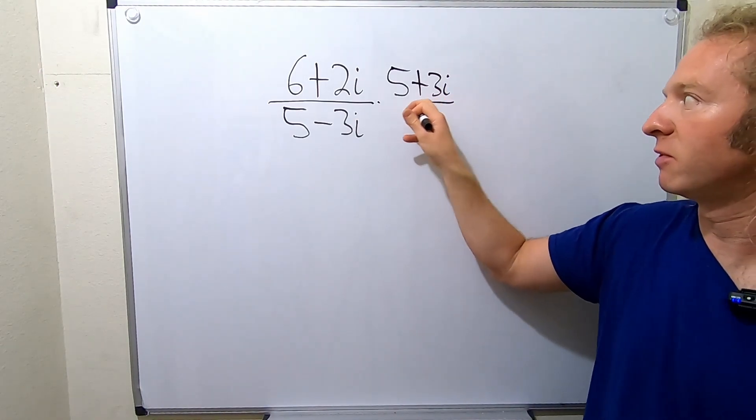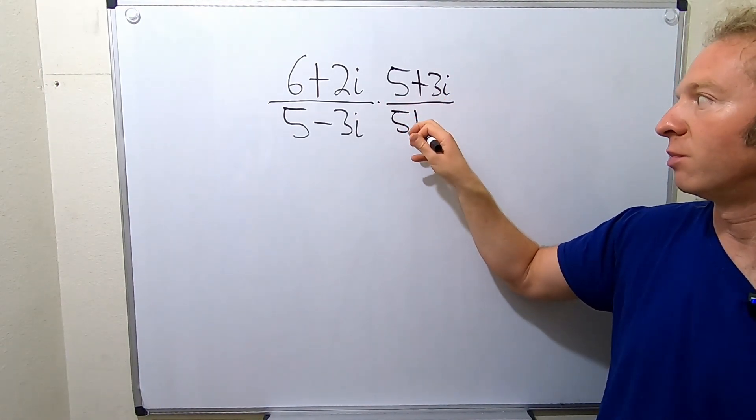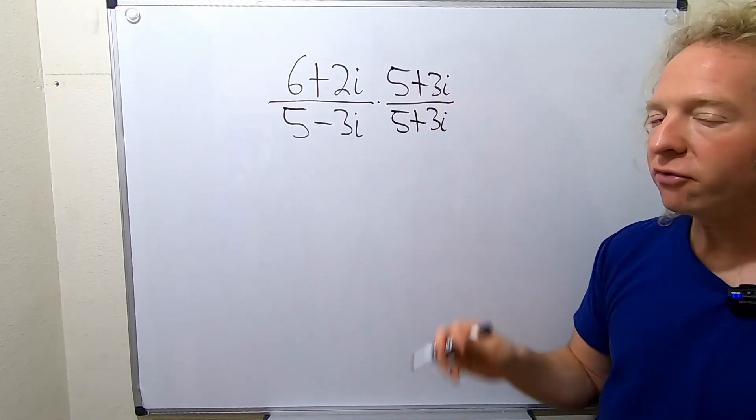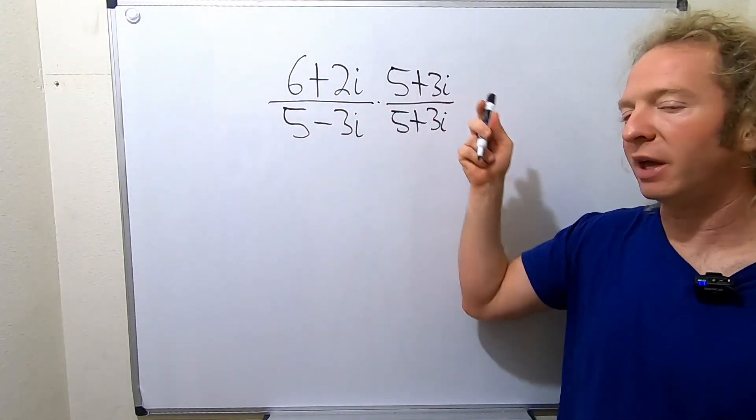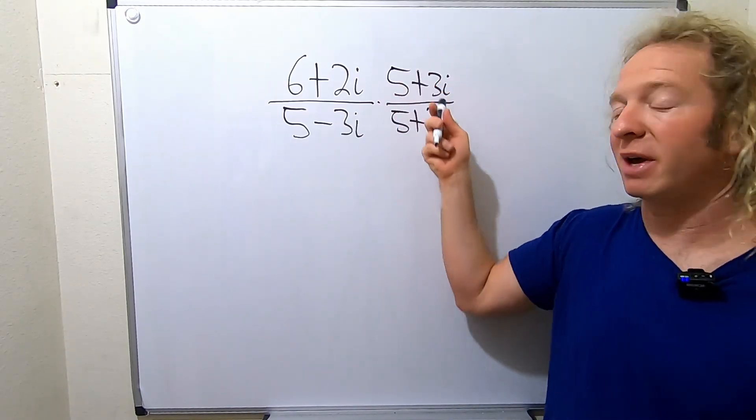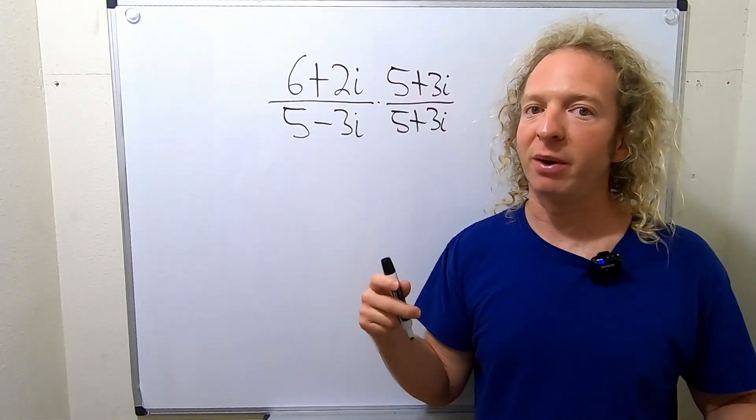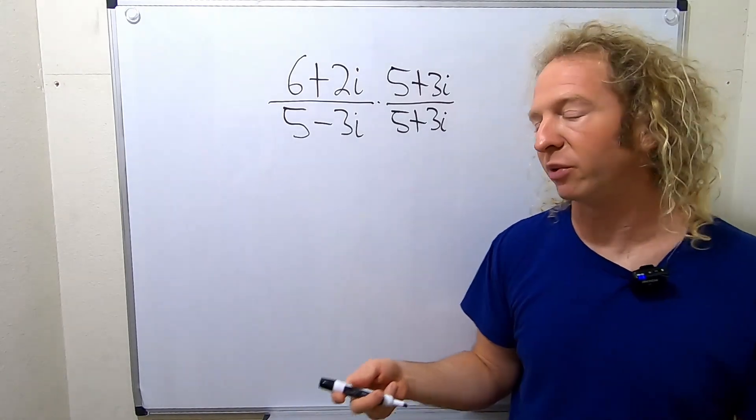And then you divide by the same thing, 5 plus 3i. Every single time, all you do is you switch the sign and then you just put that there. You have to put it on the top and on the bottom. Basically, you're multiplying by 1 in a really clever way.